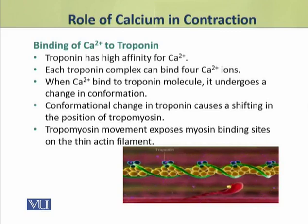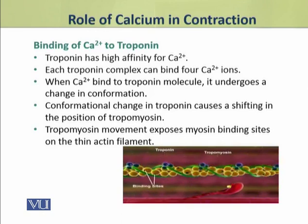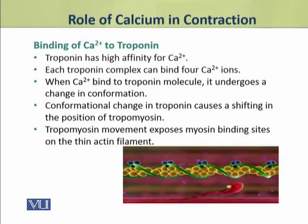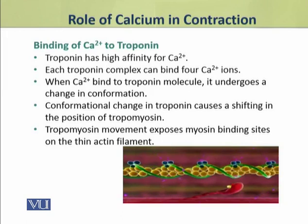This conformational change in troponin causes a shifting in the position of tropomyosin. When tropomyosin moves from its position, as a result, the myosin binding sites on the actin thin filament are exposed.